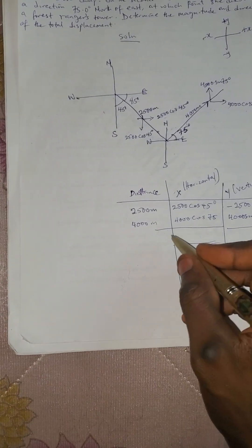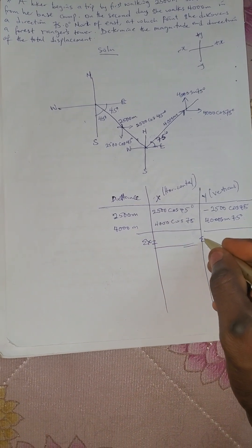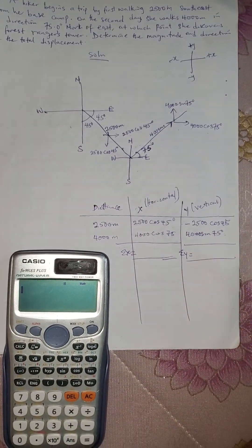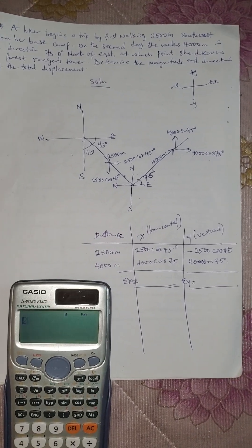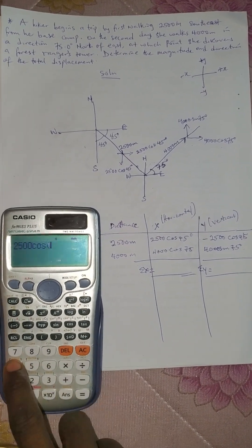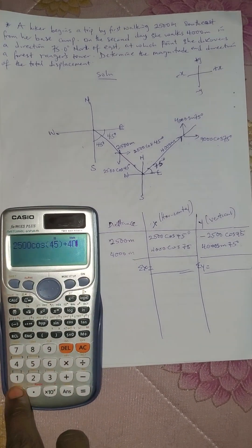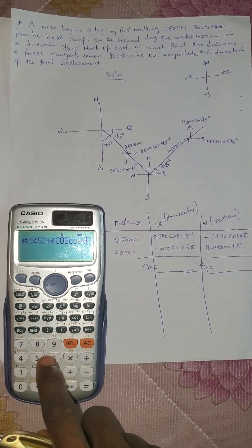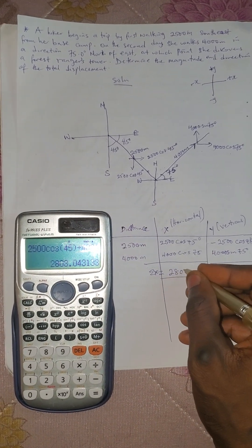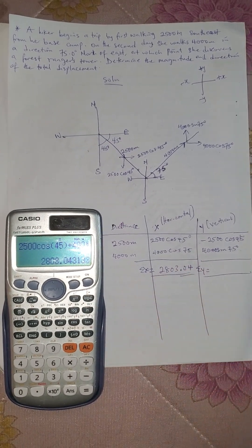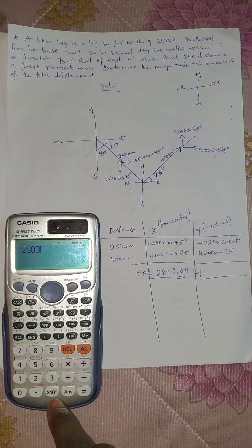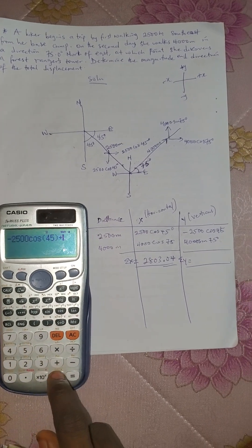Now let us find the summation of x and the summation of y. We just sum all the x components together and all the y components together. For x we have 2500 cos 45 plus 4000 cos 75, which gives 2095 plus 2030.4. For the y axis we have minus 2500 cos 45 plus...